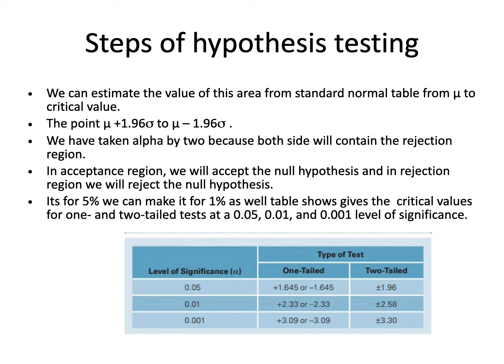This table gives the critical values for one and two-tailed tests at 0.05, 0.01, and 0.001 levels of significance, and on the basis of this table we will take the decision.